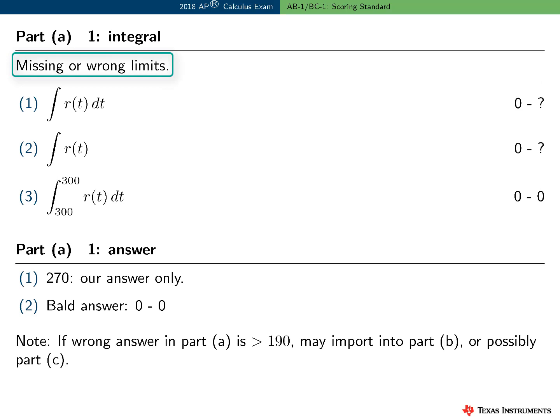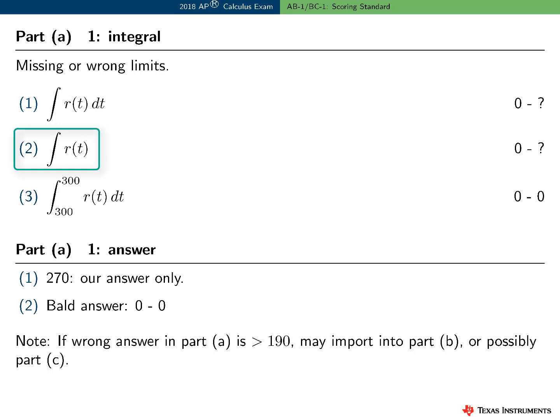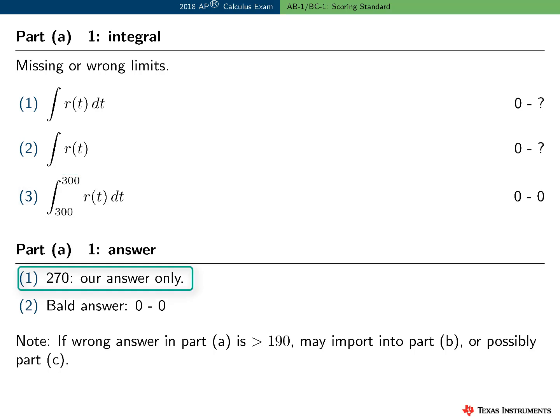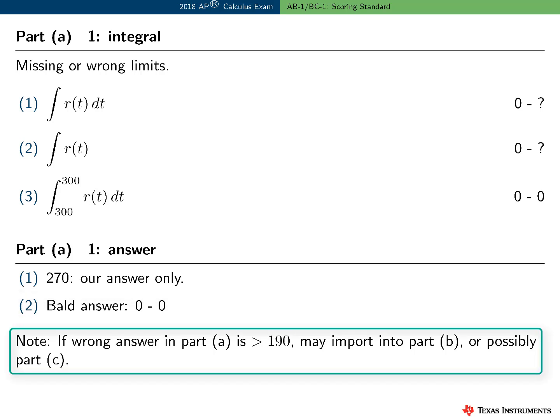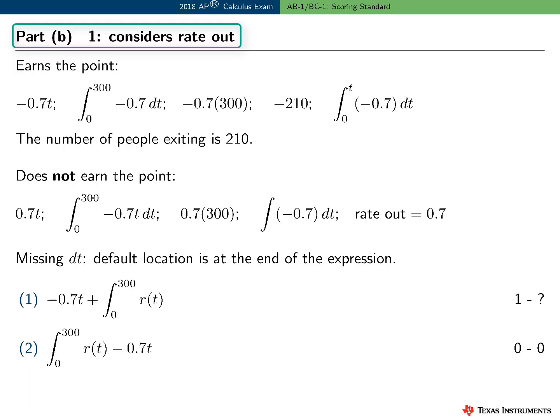If the integral is presented without bounds, the student does not earn the integral point but could still earn the answer point. The same applies if there are no bounds and no dt. However, if the bounds are both 300, the student earns zero, zero. The second point in Part A was for the answer only — 270. A bald answer with no supporting work earns zero, zero. If the student produces an incorrect answer greater than 190, they may import it into Part B and possibly Part C, and we read with the student in that case.